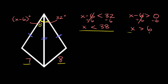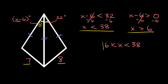We can combine these into one inequality. x is less than 38 and x is greater than 6, so the numbers we can plug in for x have to be somewhere between 6 and 38. That's your final answer right there.